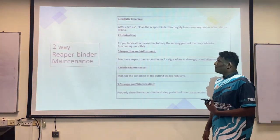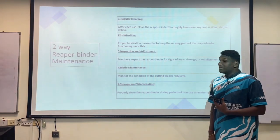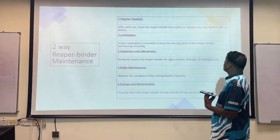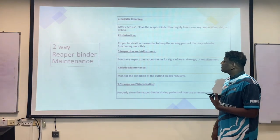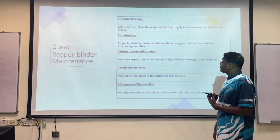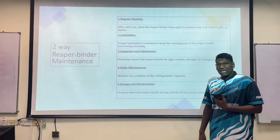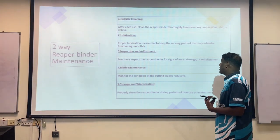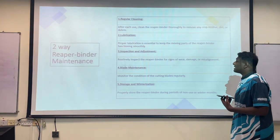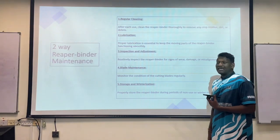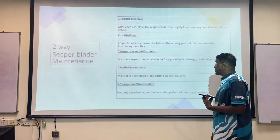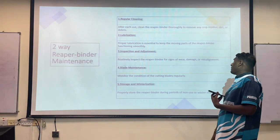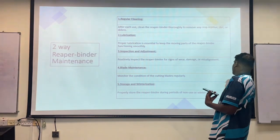The two-way reaper binder requires the following maintenance. First, regular cleaning: after each use, clean the reaper binder thoroughly to remove any crop residue, dirt, or debris. Secondly, lubrication: proper lubrication is essential to keep the moving parts of the reaper binder functioning smoothly. Thirdly, inspection and adjustment: routinely inspect the reaper binder for signs of wear, damage, or misalignment. Fourthly, blade maintenance: monitor the condition of the cutting blades regularly. Lastly, storage and winterization: properly store the reaper binder during periods of non-use or winter months.